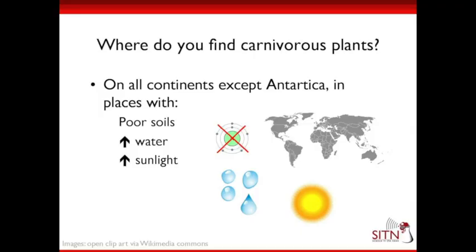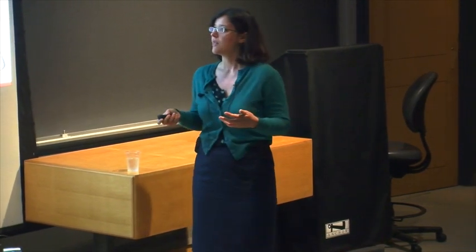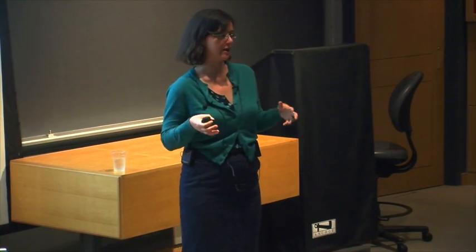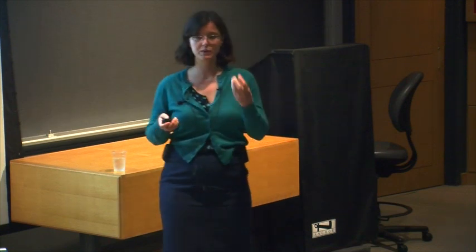Where do you find carnivorous pitcher plants? They're found all over the world on all continents except Antarctica, in places that have poor soils, low nutrients, lots of water, and lots of sunlight — often bogs. Even in Massachusetts we have pitcher plants growing in bogs. They grow in poor soils because they're good at getting nutrients from insects, but they need lots of water and sunlight because they're not good at competing with other plants in areas without those conditions. Producing the traps is costly, so they need wet, sunny environments.